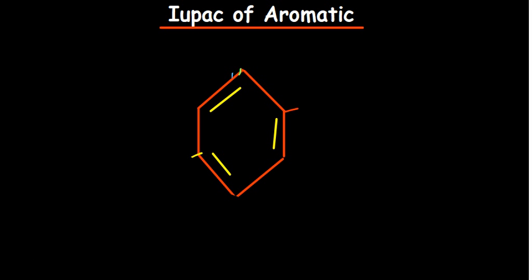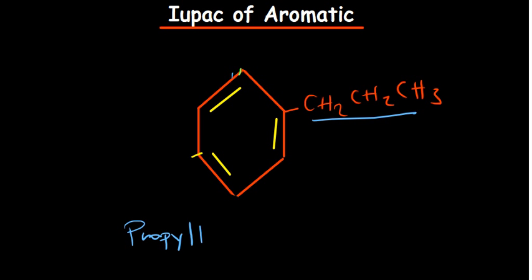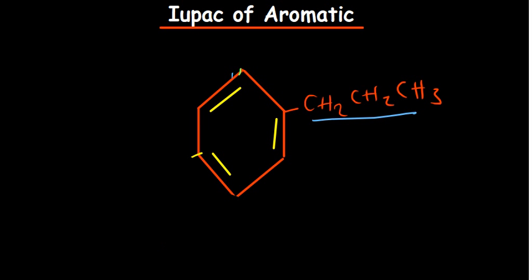Consider a case where we have CH2-CH2-CH3 attached at a certain point. That's a propyl group, so you just name it as it is — there is no functional group, so it will just be propylbenzene. The parent name remains benzene. If a chain of carbons attached is six carbons or less, except where there is a functional group, benzene stays as the parent name.